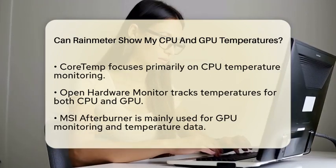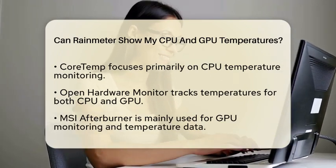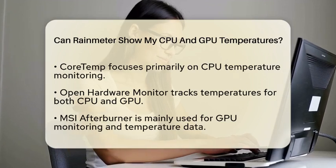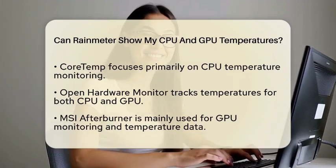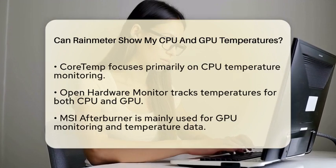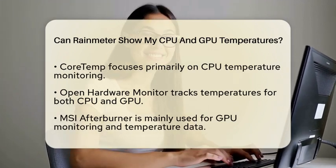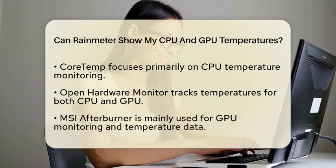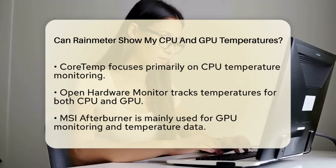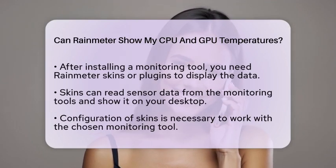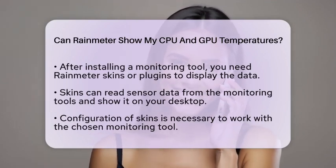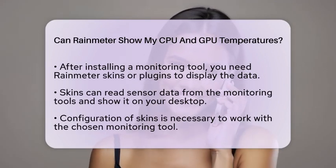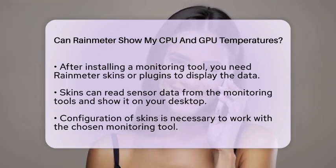Once you have one of these tools installed, the next step is to use RainMeter skins or plugins designed to work with these applications. RainMeter skins can read the sensor data that these programs expose and display it on your desktop. For instance, you can find skins that utilize HWINFO to show real-time CPU and GPU temperatures, usage percentages, and clock speeds. Other skins may integrate with Open Hardware Monitor or MSI Afterburner to visualize temperature and performance metrics.